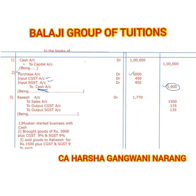Now, purchase is debited — we know that purchase is our expense, so we debit it. But why did we also debit input CGST and input SGST? Because when Muskan purchased goods, she paid GST. When she paid GST, this input CGST and input SGST became an asset.